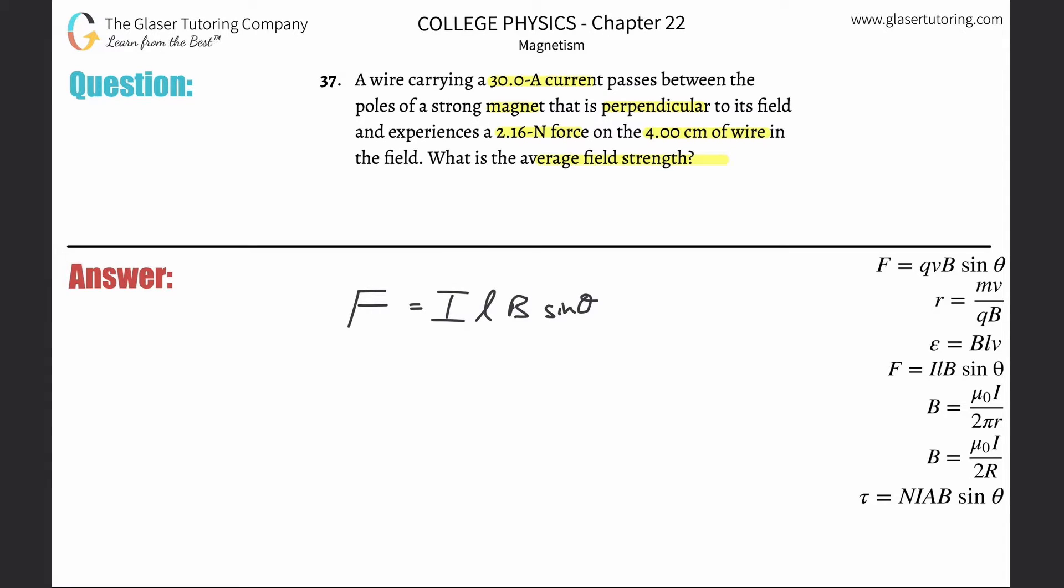They give us everything that we need to know. They're asking us for the average field strength. In other words, anytime they say average field strength, they mean average magnetic field.